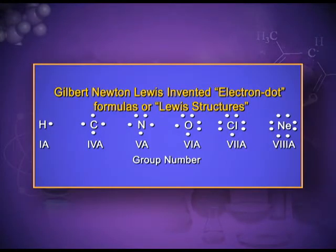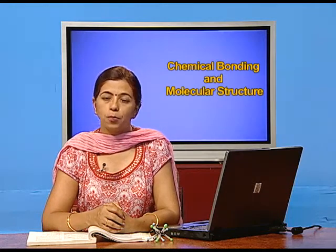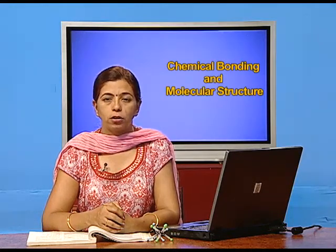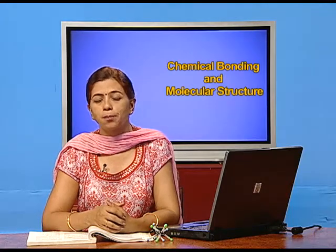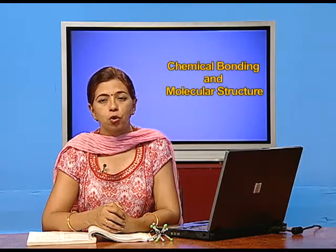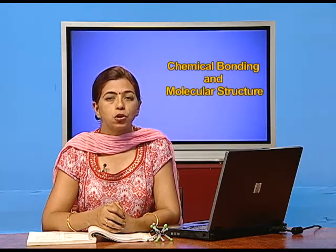The first group elements have only one electron in their valence shell, which participates in chemical bonding. We write the symbol of the element and put one dot — one dot means one electron. Similarly, the second group has two valence electrons, so we write the symbol of the element — for example, beryllium — and show two dots representing the two electrons.